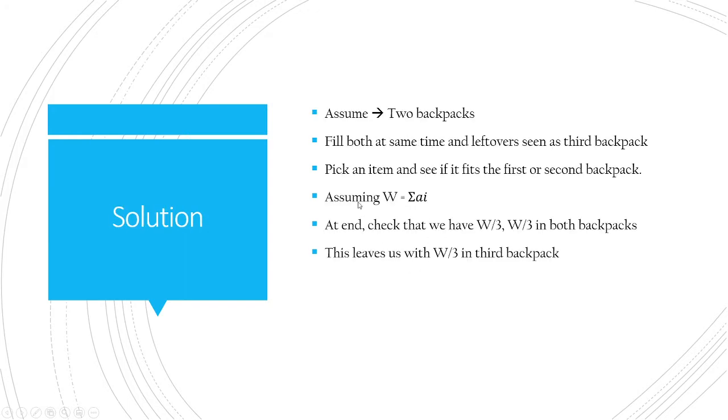So now how do we do this? The way to solve this problem is by assuming that you have two backpacks and you're trying to fill both backpacks, and the size of these backpacks obviously is going to be sigma ai over 3 for both of these backpacks.